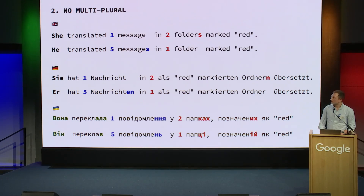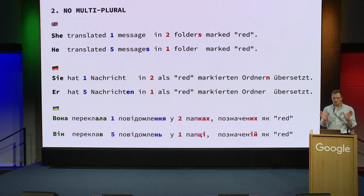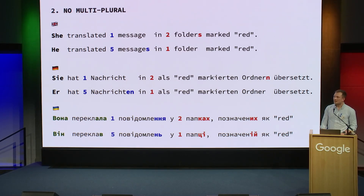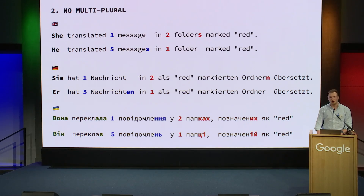This is a so-called PO killer message: this message, where she translated one message in two folders marked red, is untranslatable with PO files at all because you have two plurals. You need to split it up into two separate messages and translate those separately, but that might break the context between them, and in some languages that might break the sentence. And then there are genders. If you look at the Ukrainian version, for example, 'Vona pereklala' versus 'Vin pereklav' — they are different, so the words depend on what gender is referred to. And PO files don't have such a concept at all; they only know plural forms.